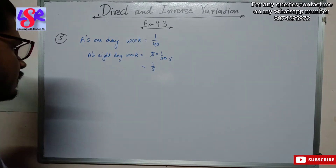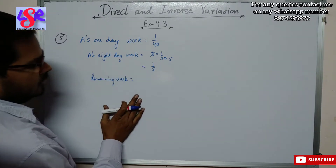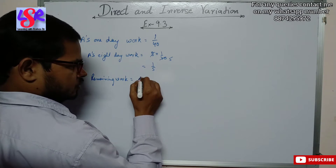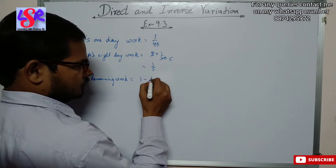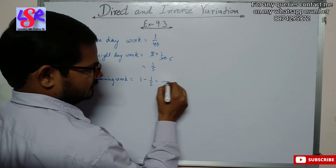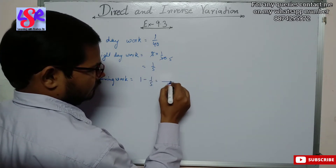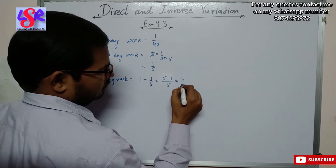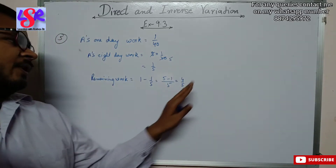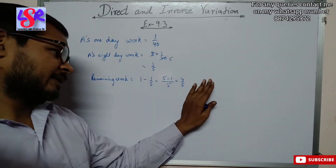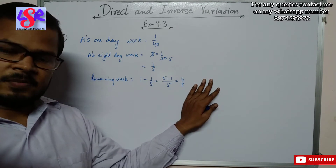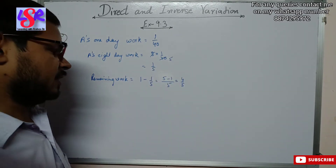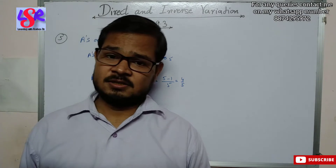Now for the remaining work — the total work is taken as 1. So 1 minus 1 upon 5. Taking LCM we get 5, so 5 minus 1 equals 4 upon 5. Therefore 4 upon 5 part of the work is still left, and B finishes it in 16 days.